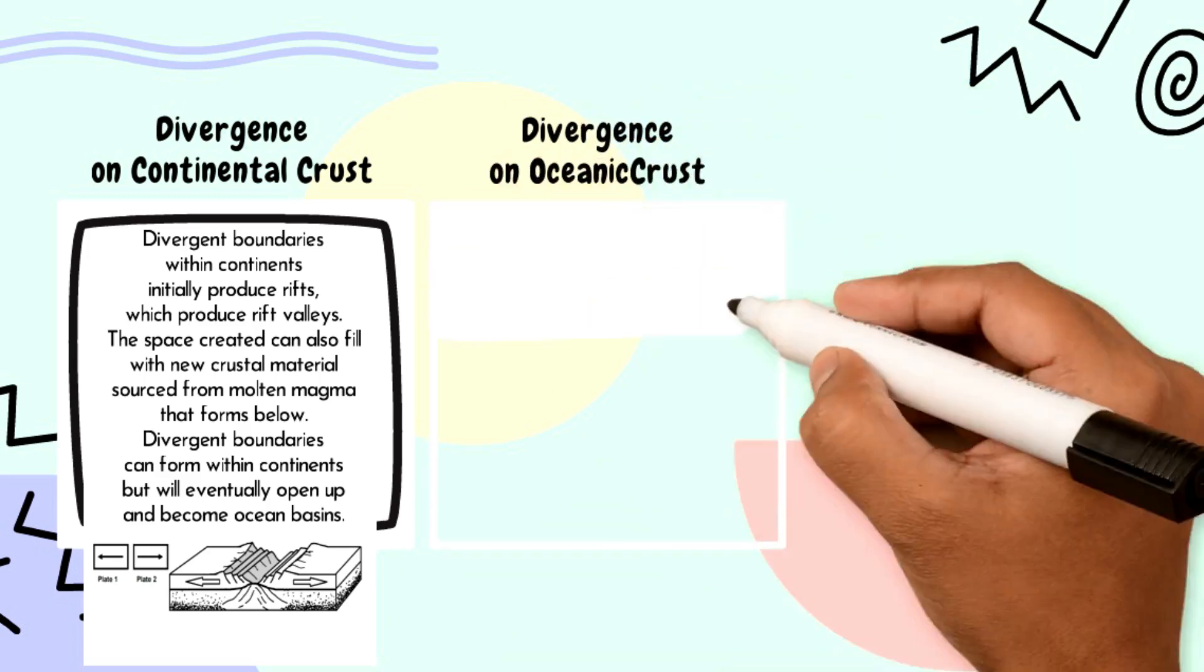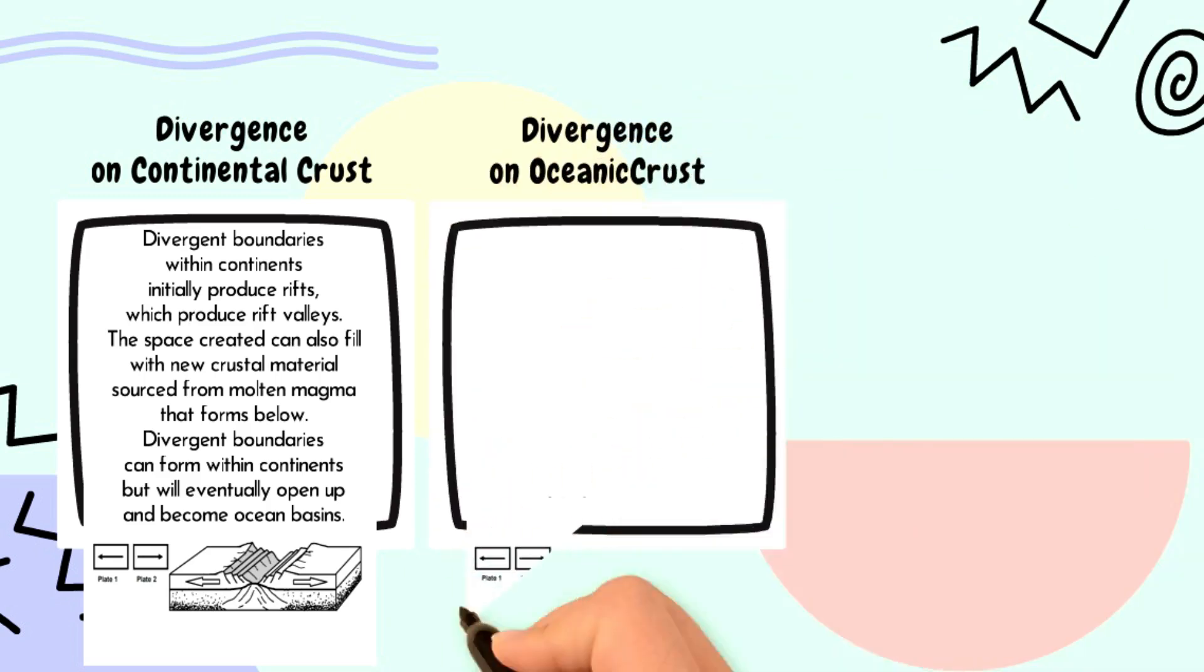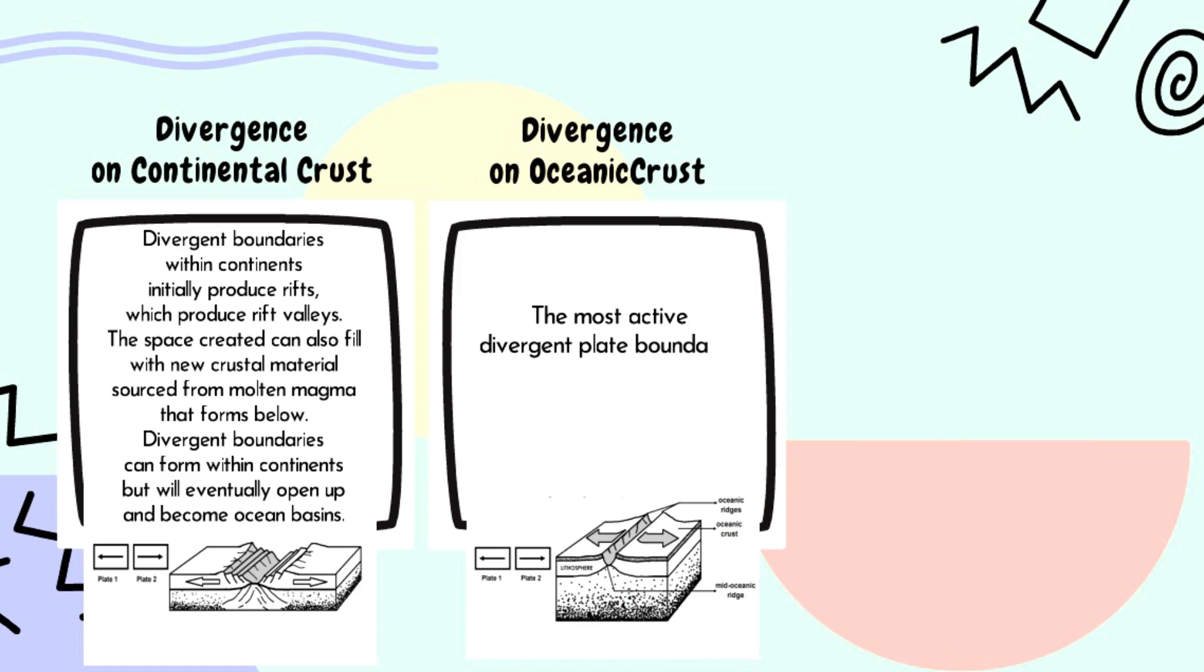Divergence on Oceanic Crust. The most active divergent plate boundaries are between oceanic plates and are often called mid-oceanic ridges.